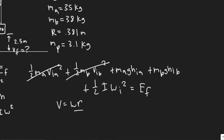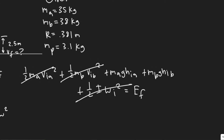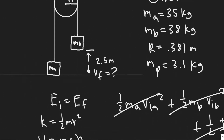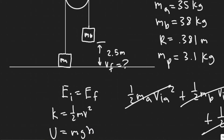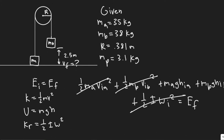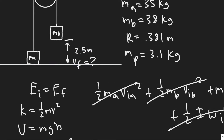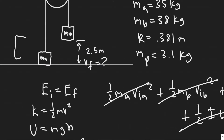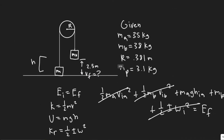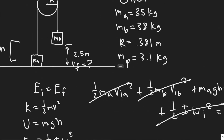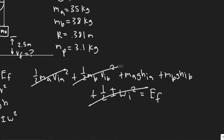Here's a key trick: V_final_A, V_final_B, and omega_final are all related. Since the cord length is constant and connects both blocks over the pulley, all parts of the system move at the same speed. Therefore V_final_A equals V_final_B. Also, omega_final equals V_final divided by R, so we can substitute that in for the rotational term.